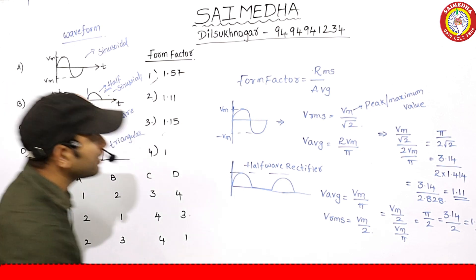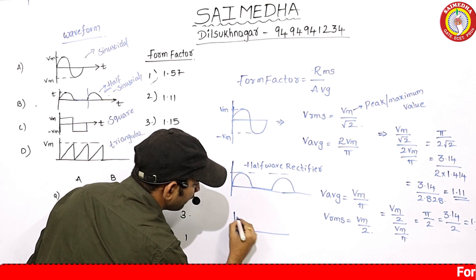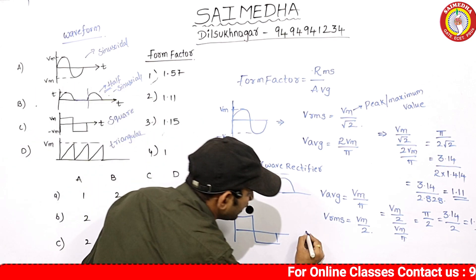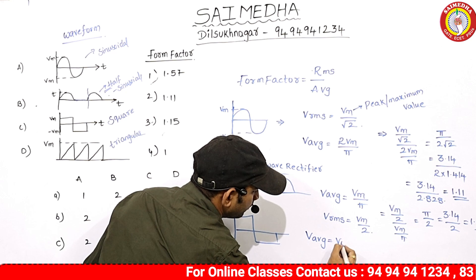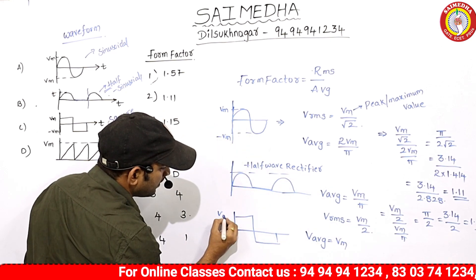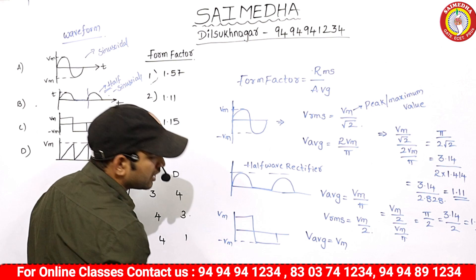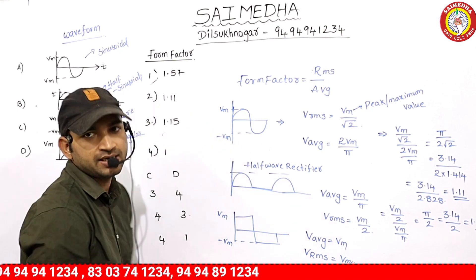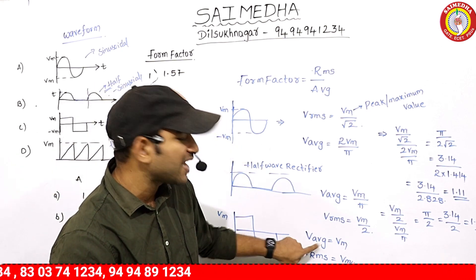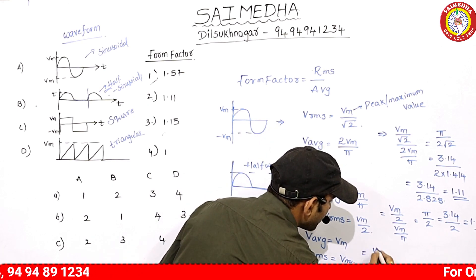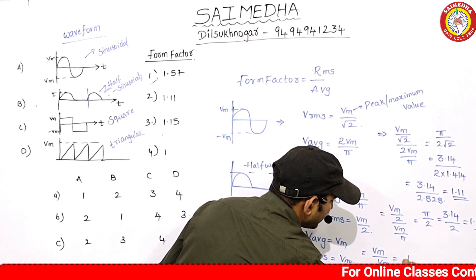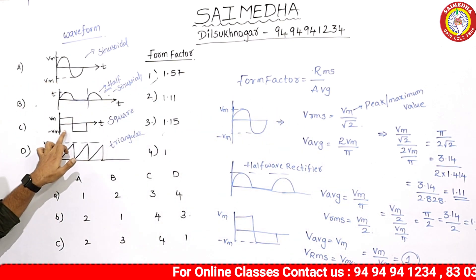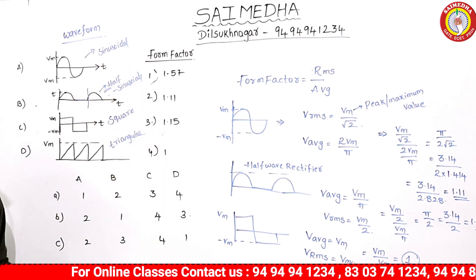For the square waveform, the average value equals the peak value Vm, and the RMS value also equals the peak value Vm. So form factor equals RMS divided by average, which is Vm divided by Vm, equal to 1. Square waveform form factor equals 1.